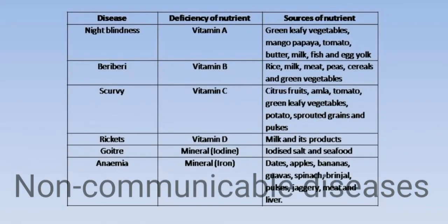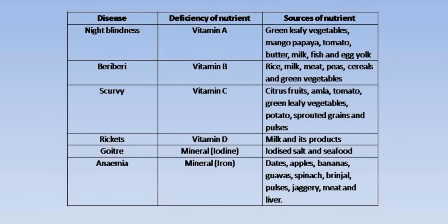Some non-communicable deficiency diseases are night blindness, beriberi, scurvy, rickets, and anemia. These diseases happen when there is a lack of any nutrient in your body. If there is a deficiency of any vitamin or mineral, these non-communicable diseases can occur.